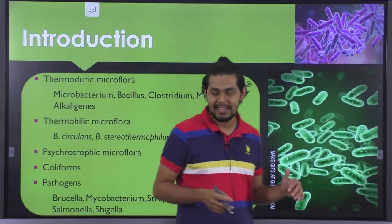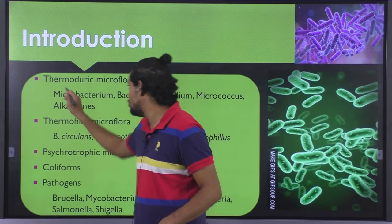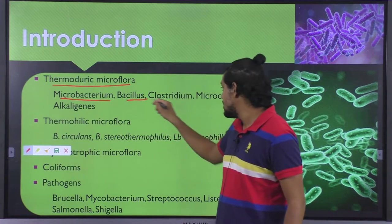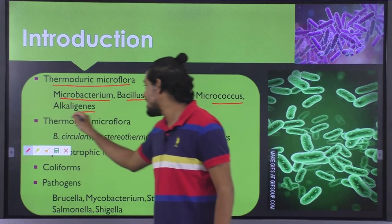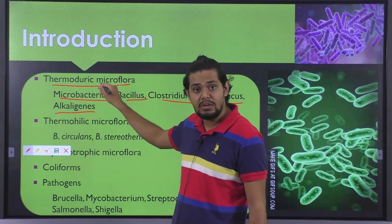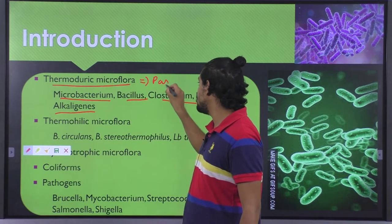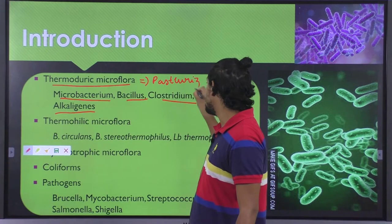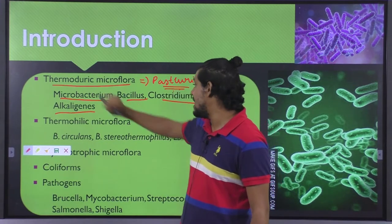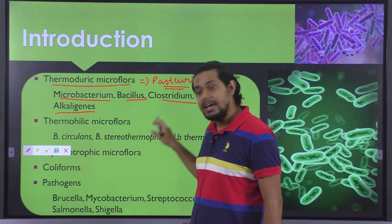Following the mesophilic variety, we have another distinct category: the thermoduric microflora. Thermoduric microflora exclusively includes mycobacterium, bacillus, clostridium, micrococcus, and alcaligenes. These are microorganisms which can resist the pasteurization temperature but cannot multiply at that particular temperature. So they are regarded as thermoduric microorganisms.